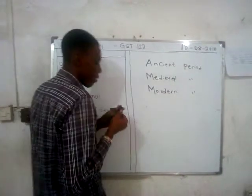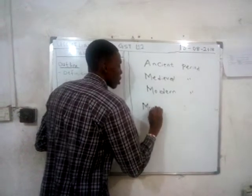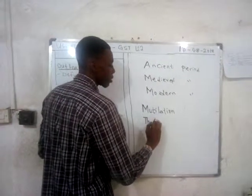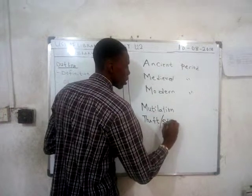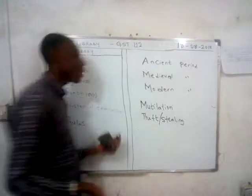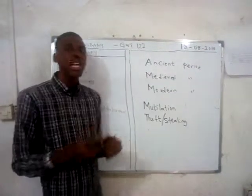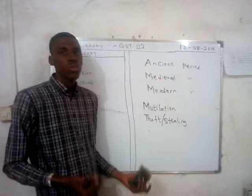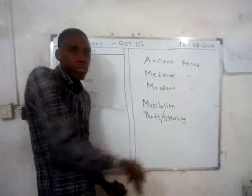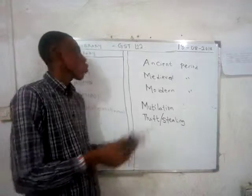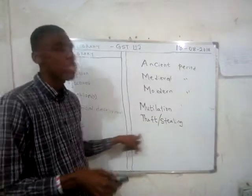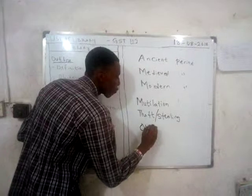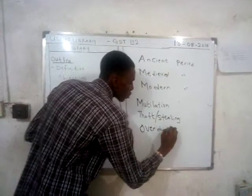Another rule concerns stealing. Some library users, after their consultation and study, take books that interest them from the library without authorization. Users are not meant to engage in any act of theft. Another offence is overdue borrowing — taking library books beyond the stipulated return time.